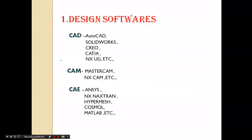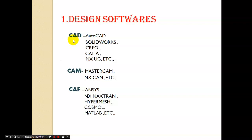The first factor is design softwares. A design engineer must have knowledge of any one of these categories of software: CAD, CAM, or CAE. CAD means computer-aided designing. In computer-aided designing we have a lot of softwares. Some of the important ones are AutoCAD, SOLIDWORKS, Creo, CATIA, and NX or UniGraphics.